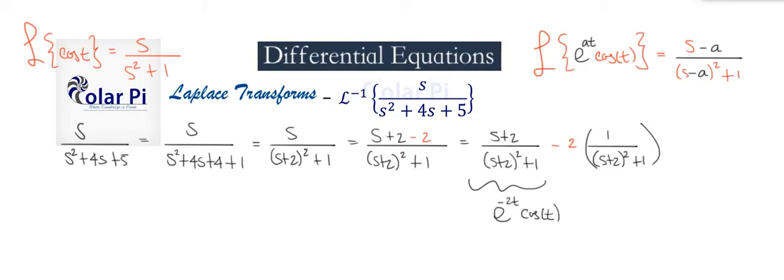And then the second quotient, other than the minus 2 in red, is e to the minus 2t times sine t.